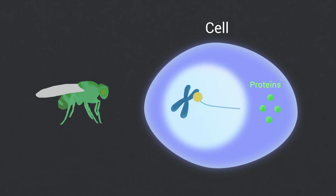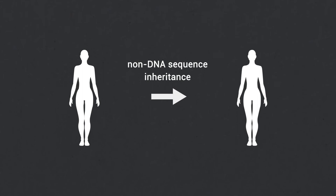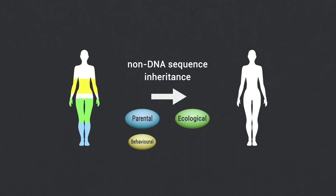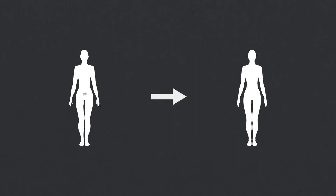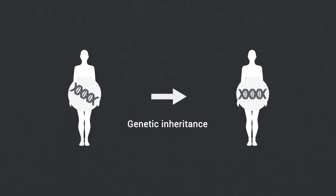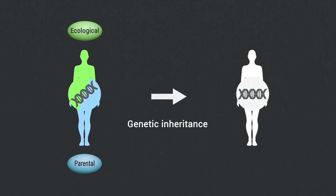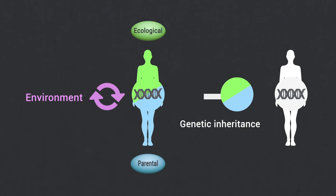We now know that non-DNA sequence information is heritable. Parental, ecological, behavioral, and cultural information can be transmitted to the next generations. However, if one assumes that DNA is the only source of heritable information, one could postulate that complex chains of DNA-driven events ultimately drive parental and ecological behaviors. In this view, parental or ecological inheritance, which appears as non-genetic at first glance, would be determined by the interplay between genes and environment. Therefore, one might still conclude that DNA sequence is the molecular substrate of natural selection.